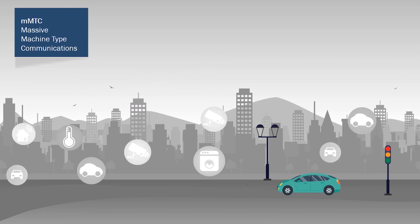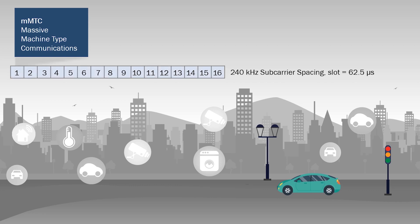In the massive machine type communications use case, MMTC, we have massive amounts of devices running on low power and typically using smaller amounts of data in short transmission times. Carrier separation will allow us to better share the information and provide for all the different types of devices, enabling lots of devices to transmit in short bursts with a larger carrier separation.